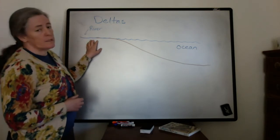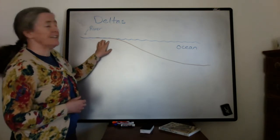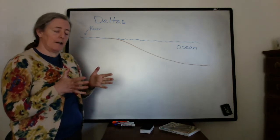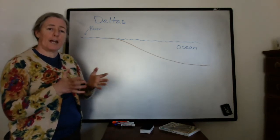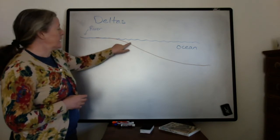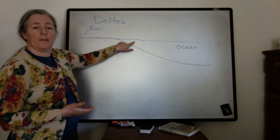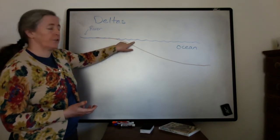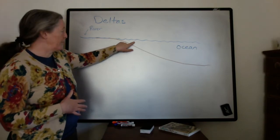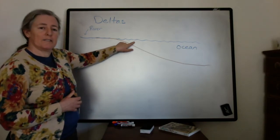The sediment is transported in the channels in rivers, and they have a very narrow geometry and fast flow. When those channels interact with the standing water in the lake or the ocean, the flow speed slows down very quickly, and that sediment is deposited.